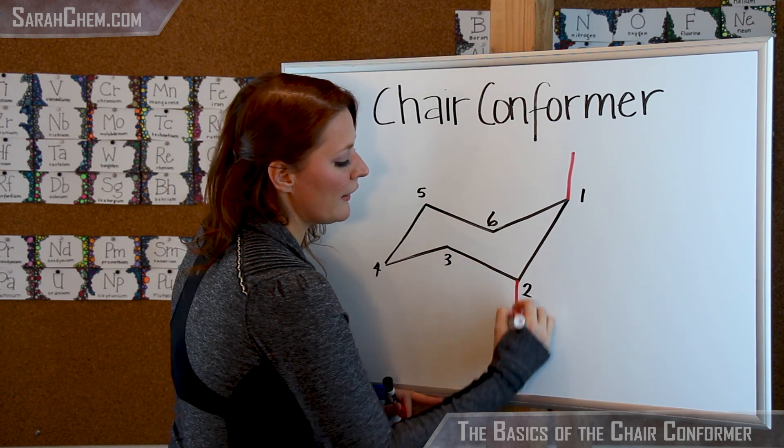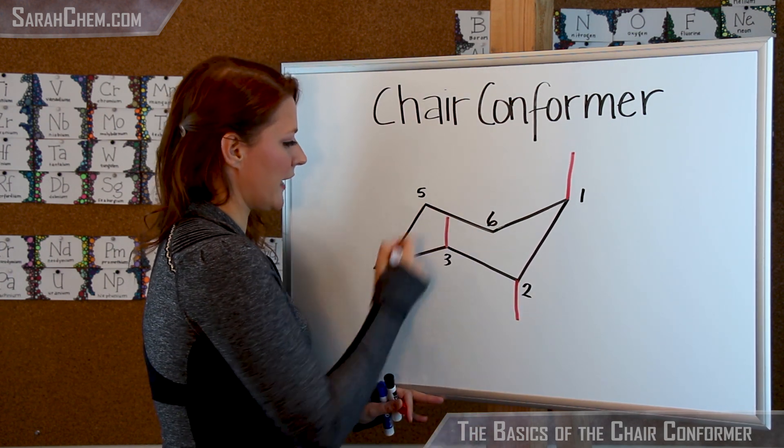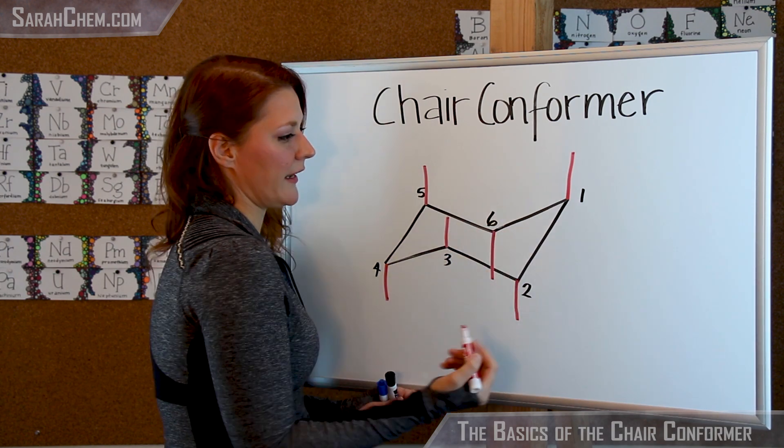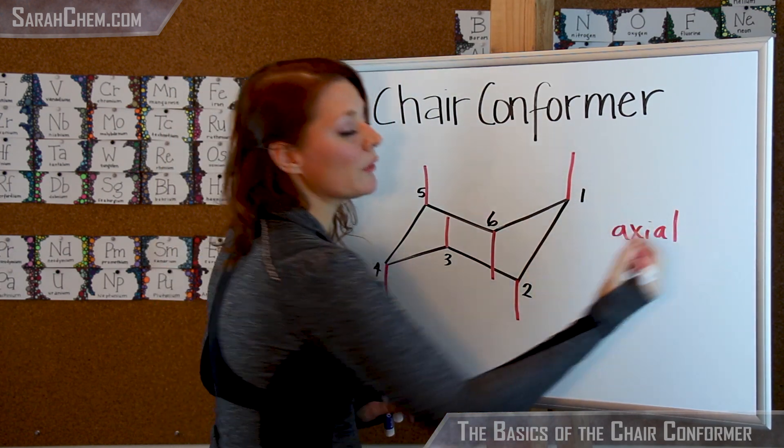So that means on carbon two, axial would be down. Three up, four down, five up, six down. And these here are all of your axial positions.